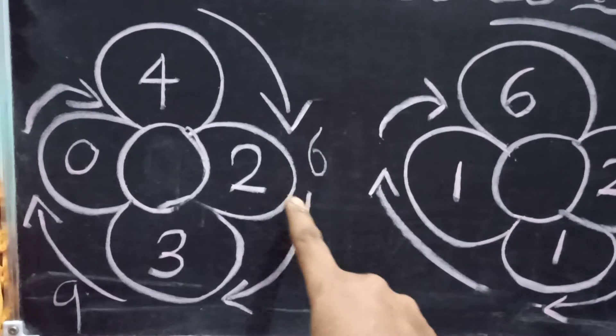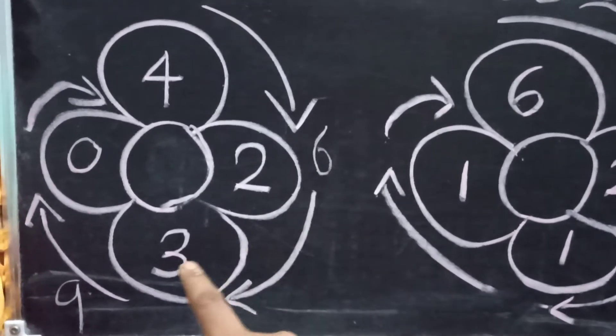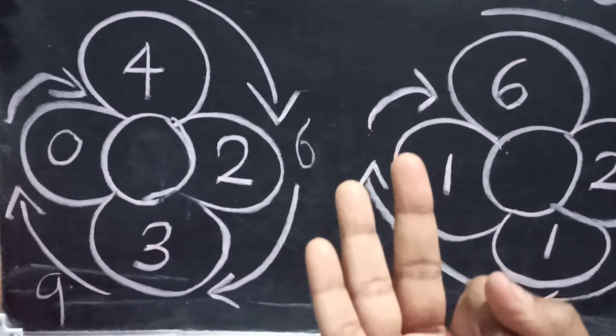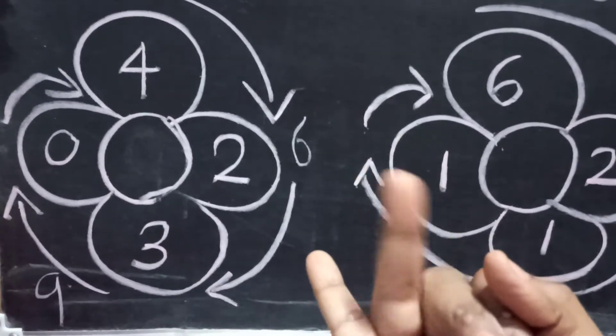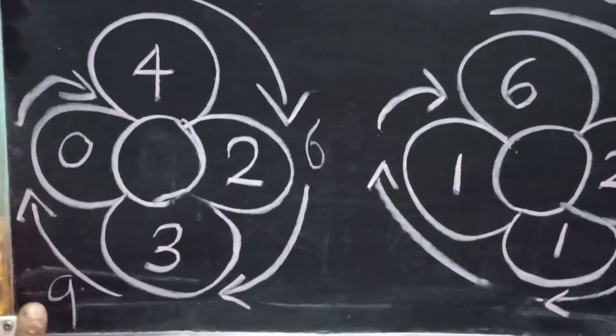Then the answer should be kept in mind. Six in the mind, three in the fingers. After six, seven, eight, nine. So we have got nine here.